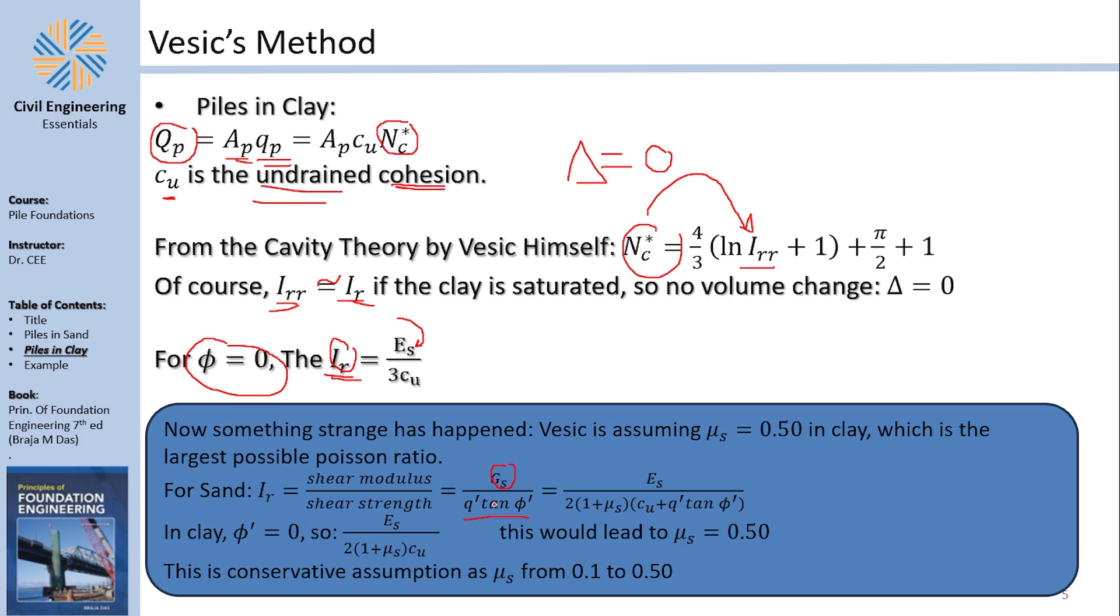Now, this is for sand. And let me just add here a C plus this stuff because we are talking about clay. And you can actually remove this entire thing. So in other words, Irr in clay is Gs, which is the shear modulus, divided by C, the cohesion, or Cu in this case.